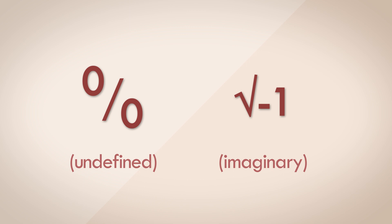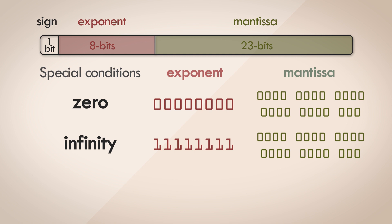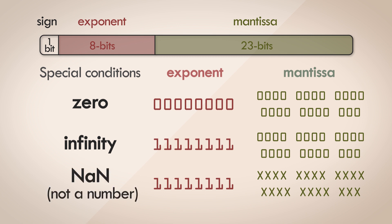The way you represent the concept of an illegal value is by setting all of the exponent bits to one, and having any combination of the mantissa, other than it all being zeros, because when the mantissa is all zero, the number is infinity. So this representation is called NaN, or not a number.